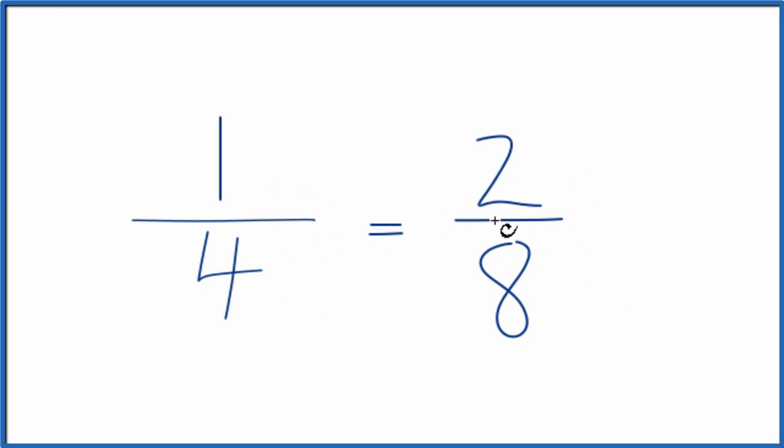If you divide one by four, or two by eight, you'll get 0.25. They have the same value, just represented differently.